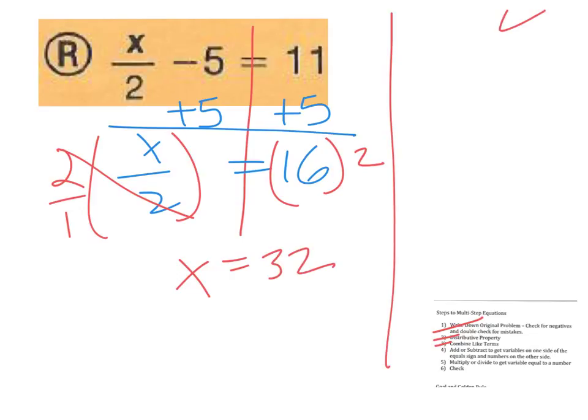Again, go back and show the check. We're going to have 32 divided by 2 minus 5 equals 11. Well, 16, right, minus 5 equals 11, and that's true. So my answer was correct.